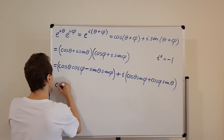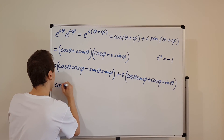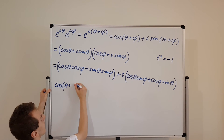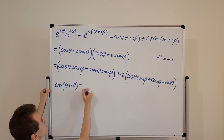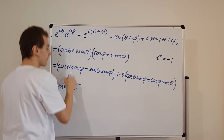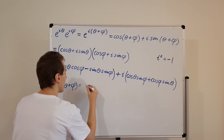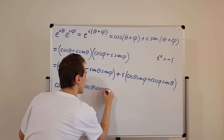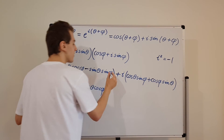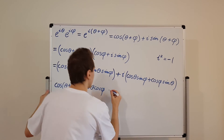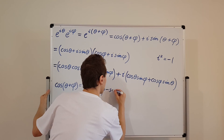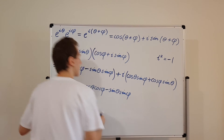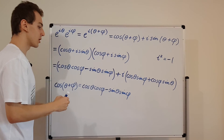Matching the real components gives us our first trigonometric identity: cosine of theta plus phi equals cosine theta times cosine phi minus sine theta times sine phi.